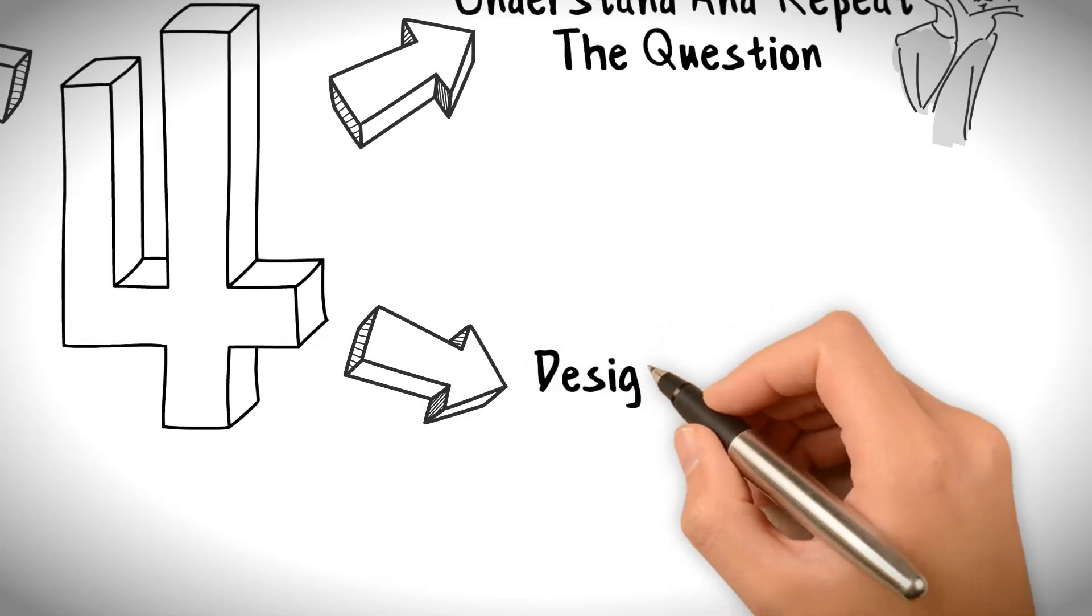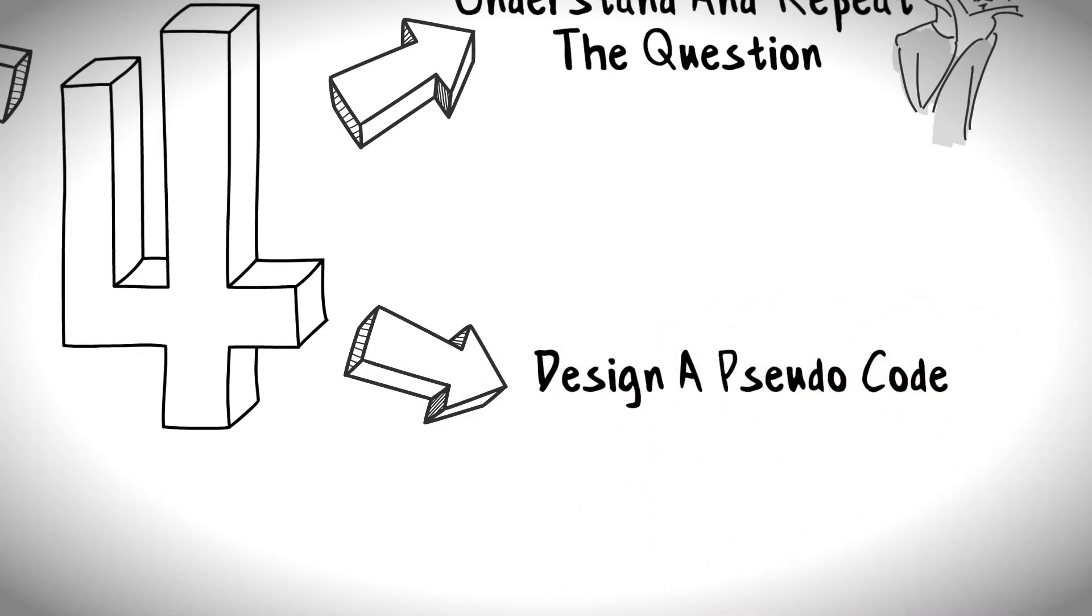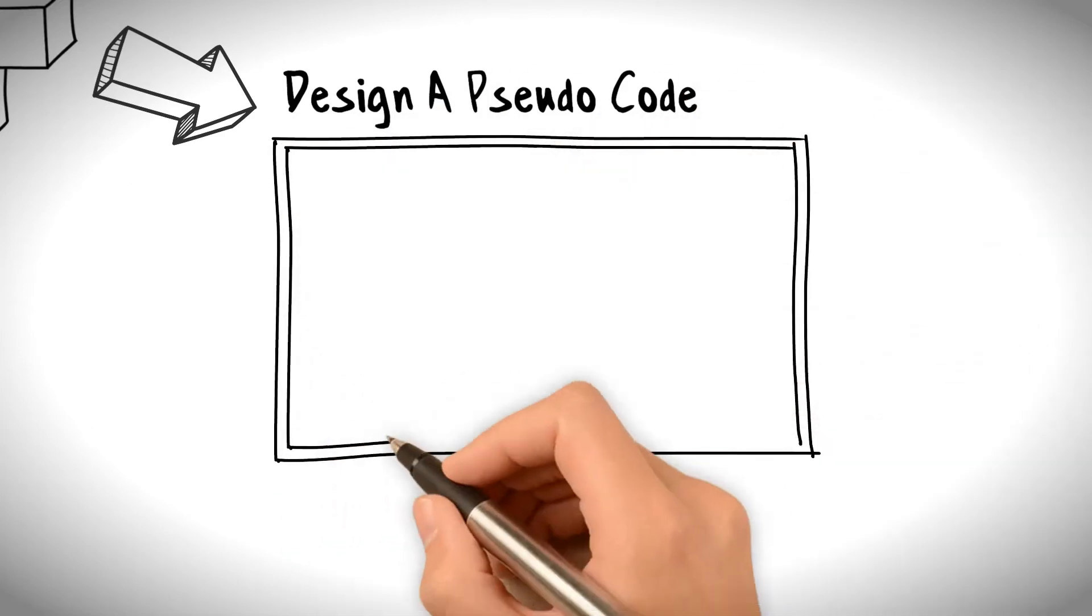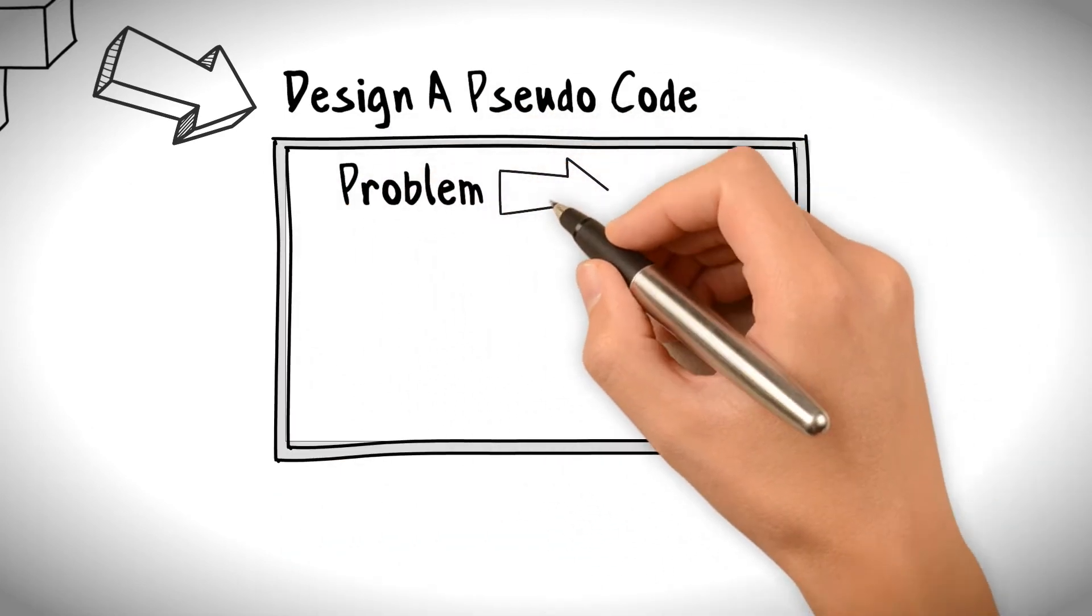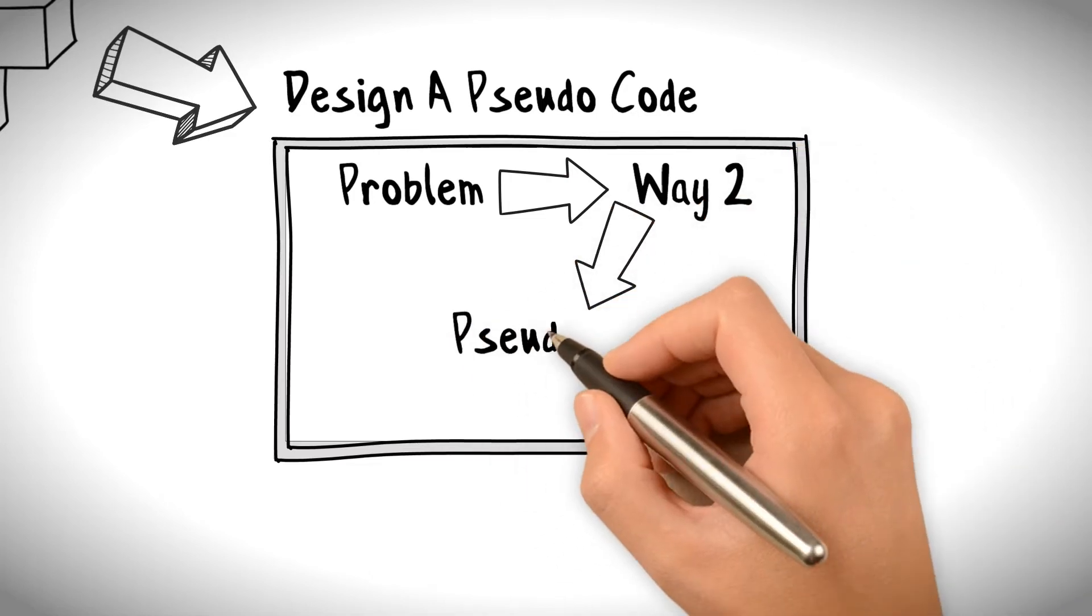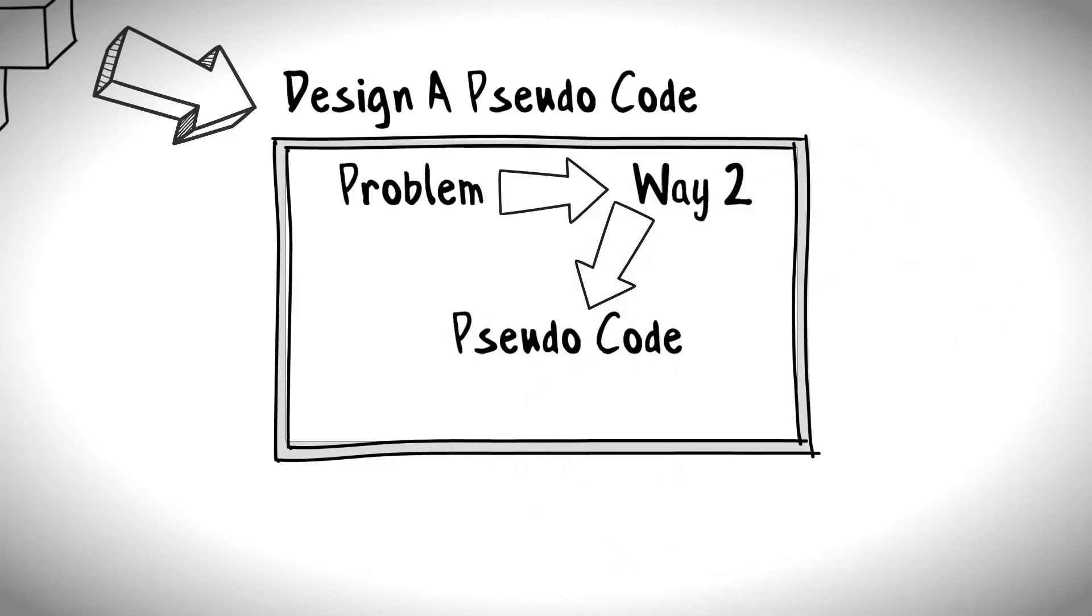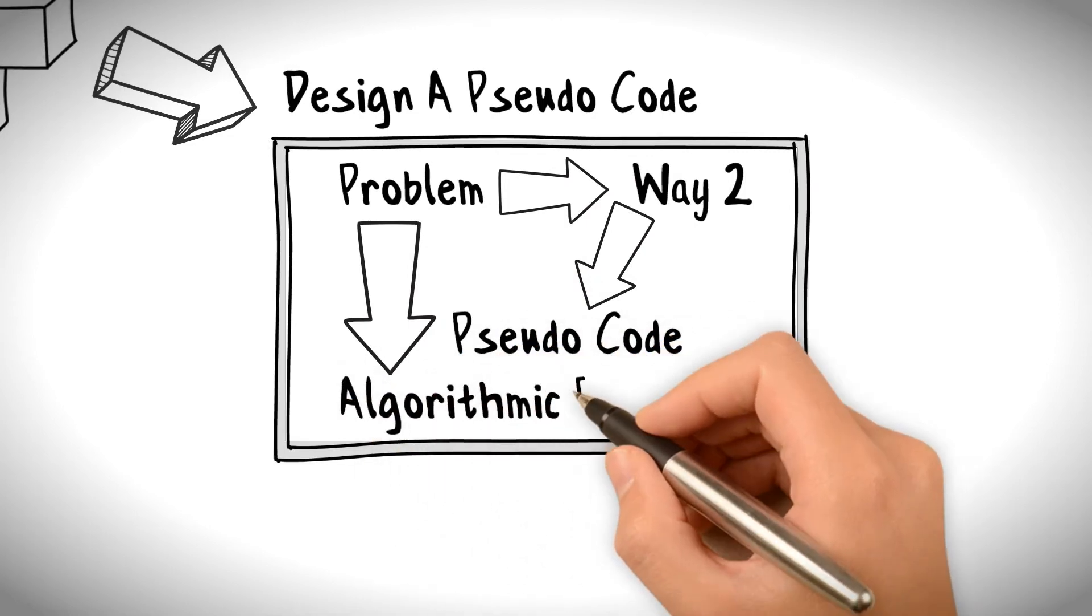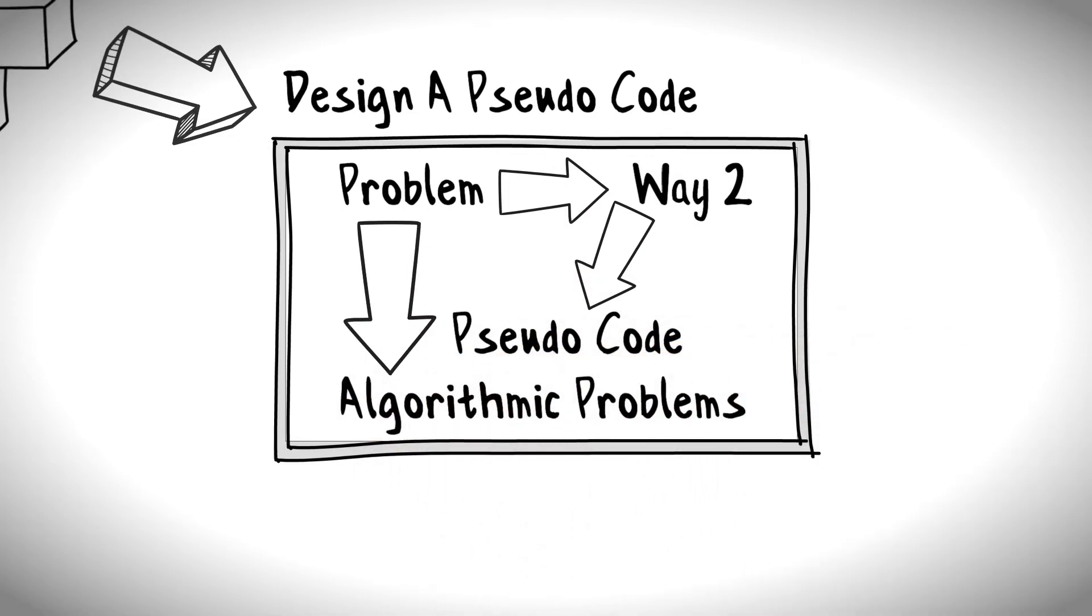Design a pseudo code. Until now you have the solution in hand, but still you should resist the urge to directly solve the problem. Instead, you must design the pseudo code for your solution. Understand that most of the problems will be algorithmic in nature, and the best way to solve them is by designing an overall outline using pseudo code.